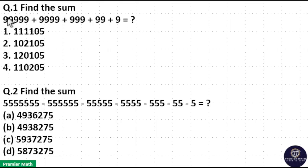Find the sum of the following numbers. Here 9 repeated 5 times, here repeated 4 times, here 3 times, here 2 times and here 1 time.